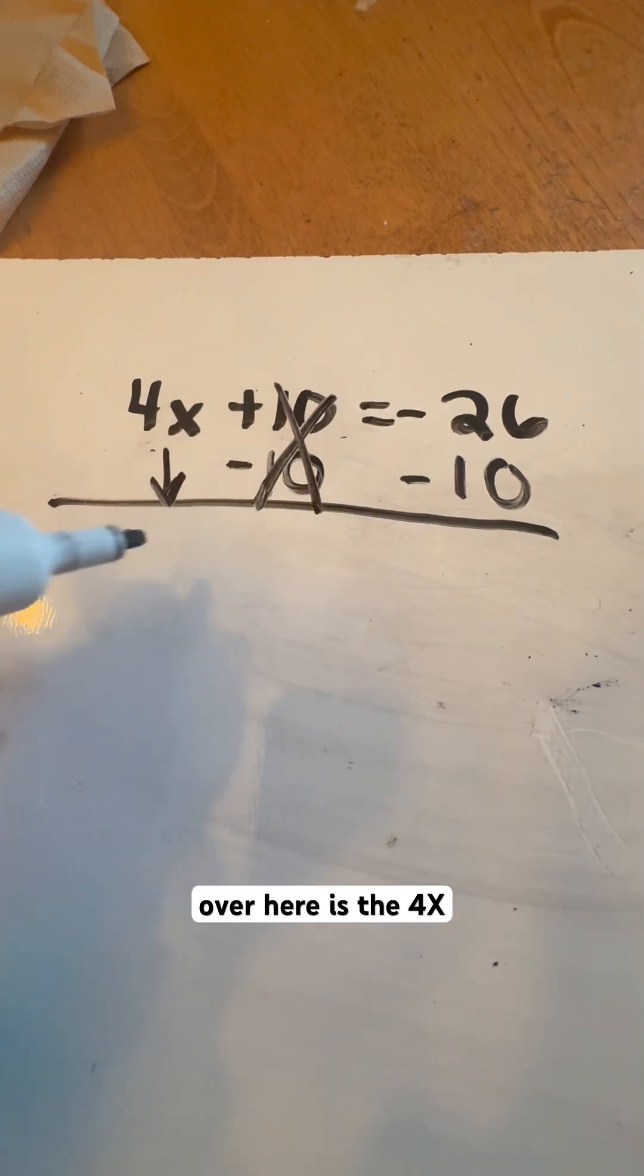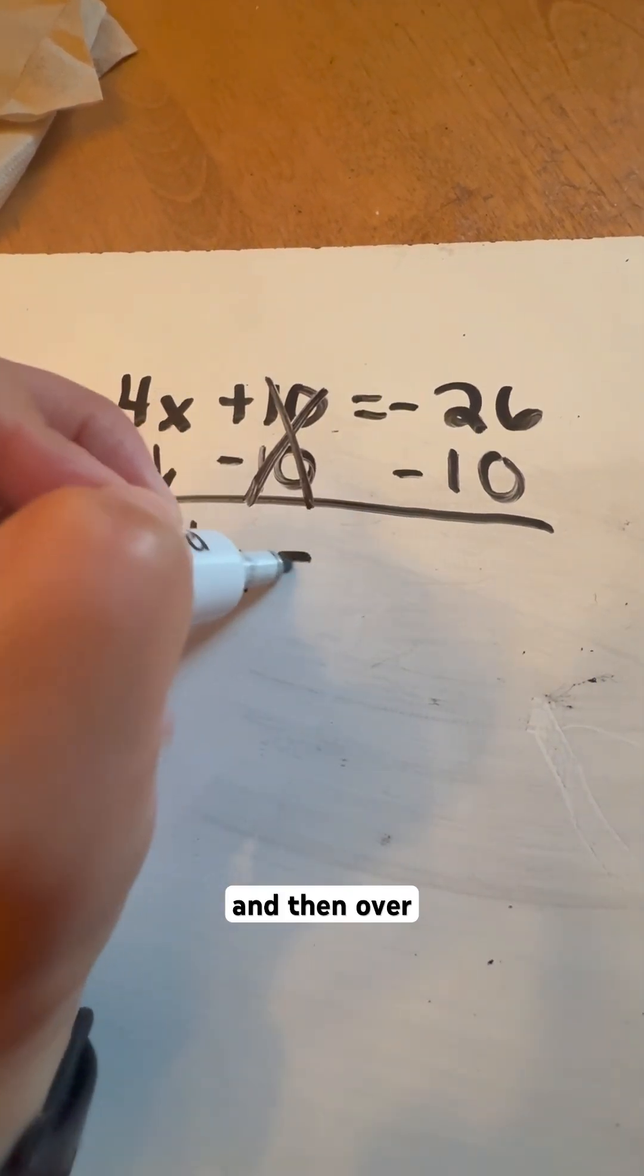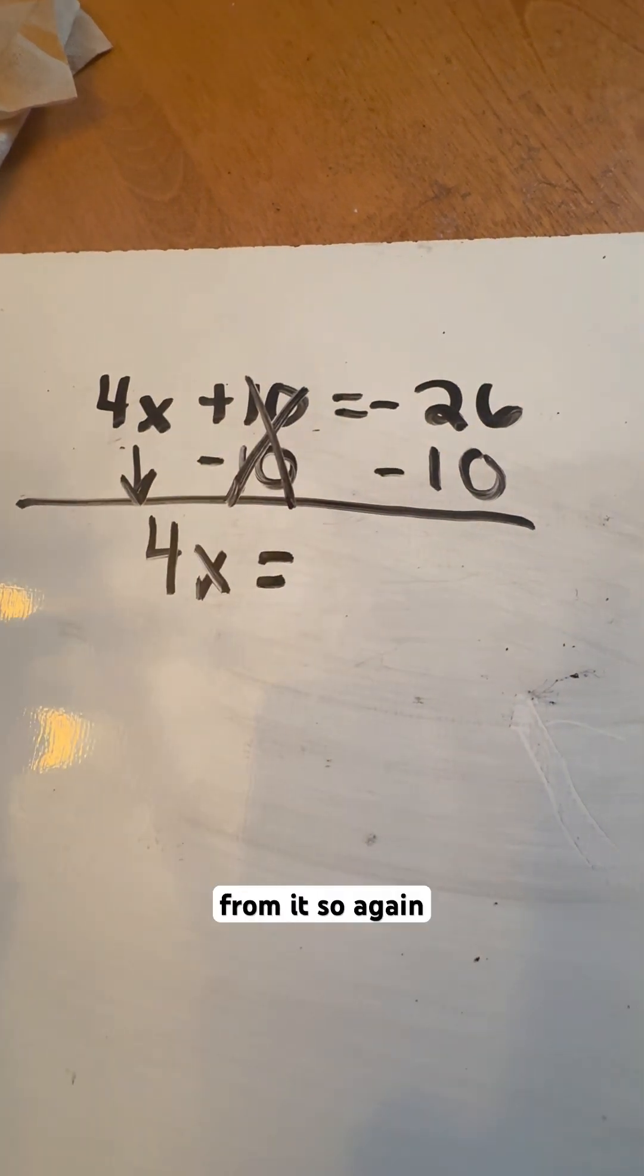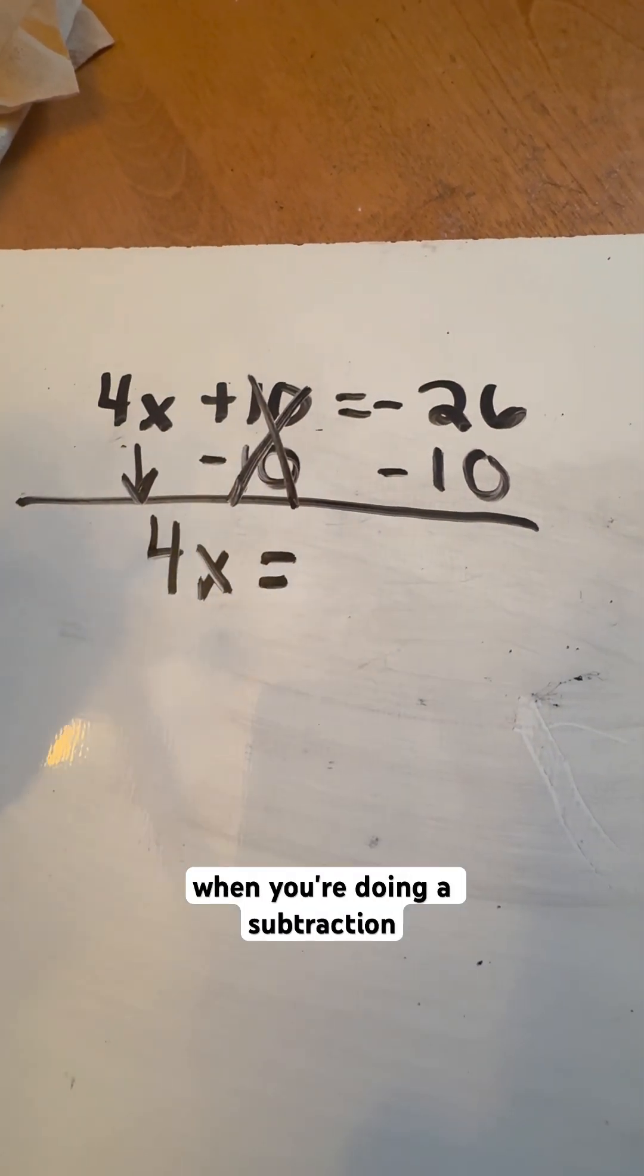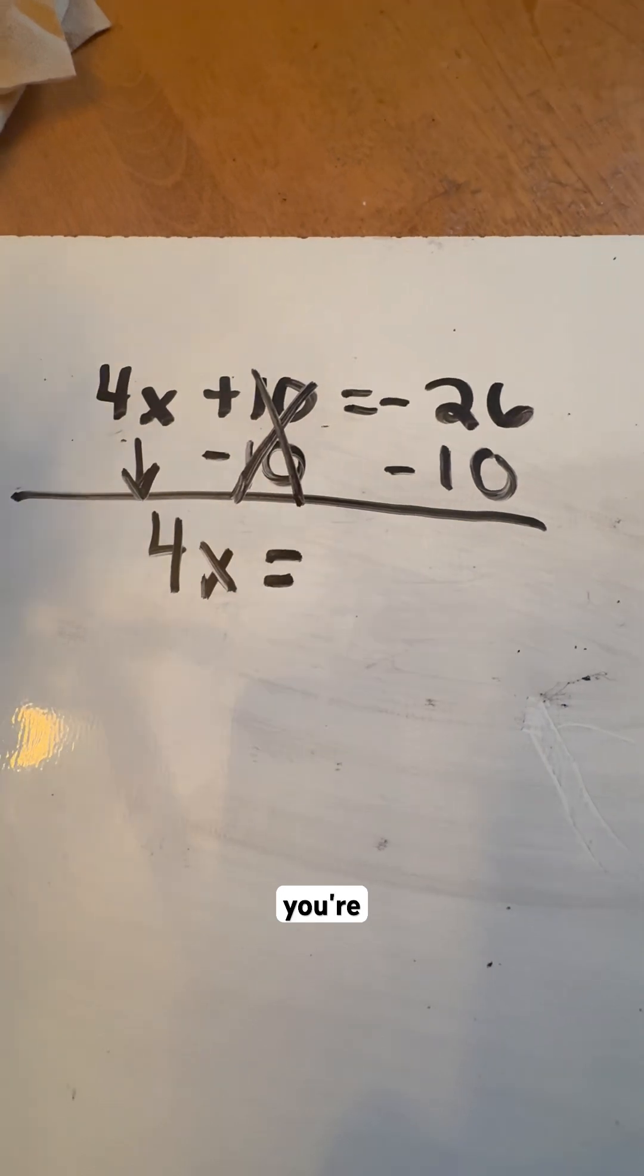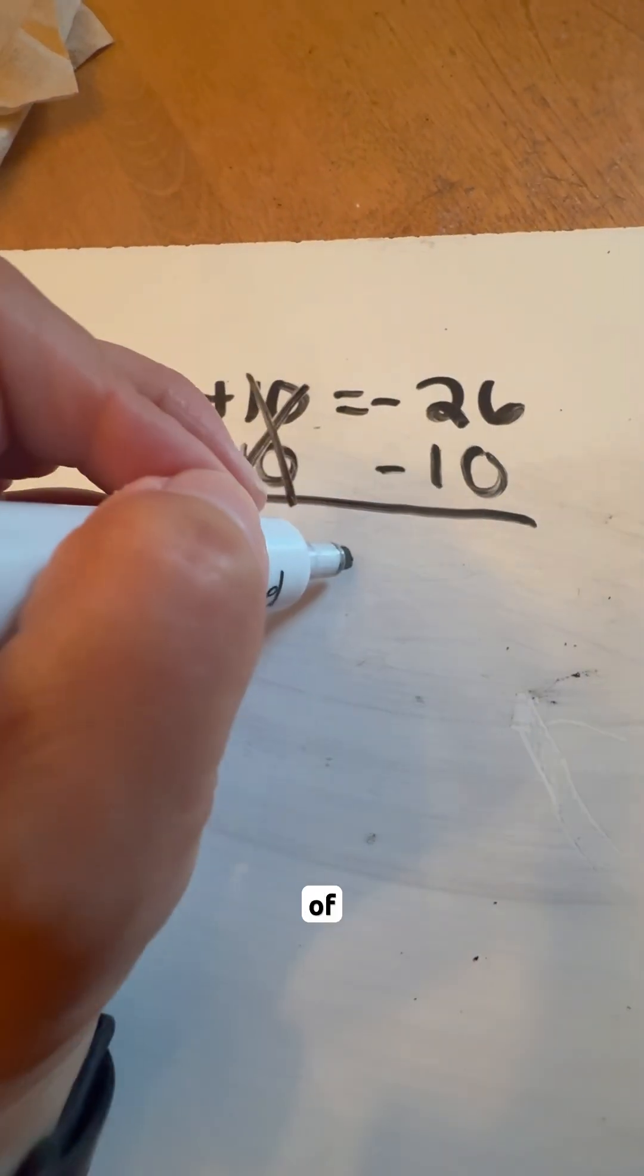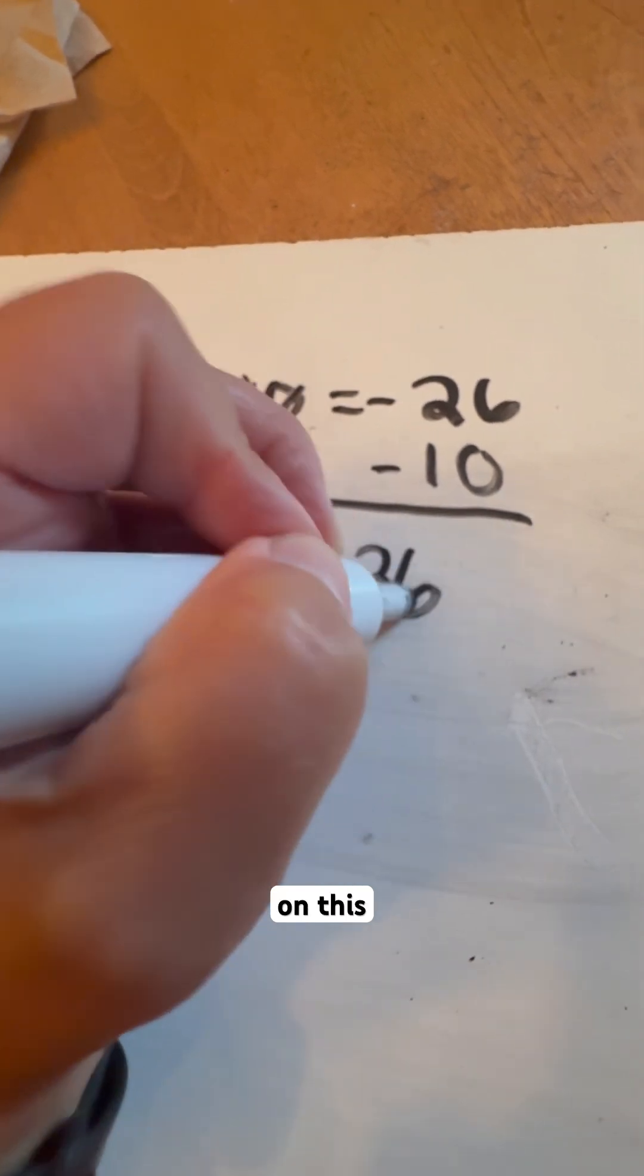What we're going to have left over here is the 4x. And then over here, we're having negative 26 and we're going to subtract 10 from it. So again, you're doing a subtraction of a negative number, you're making it more negative. So when we combine those two together, you have a total of negative 36 on this side.